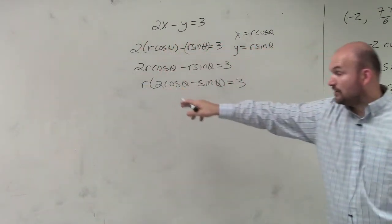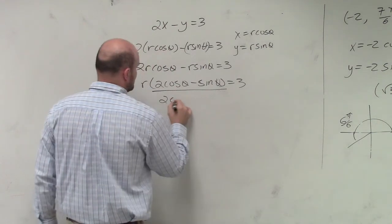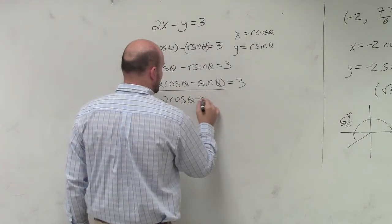Then, to solve for r, I'm going to divide by 2 cosine of theta minus sine of theta.